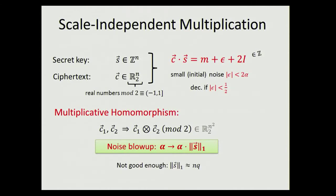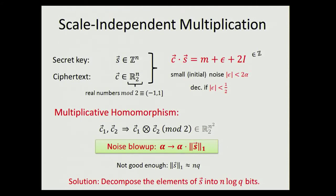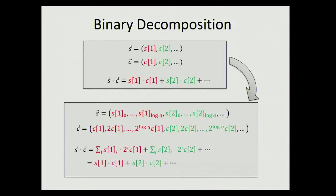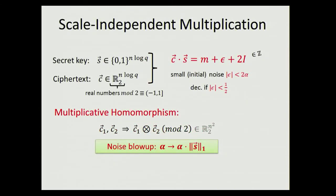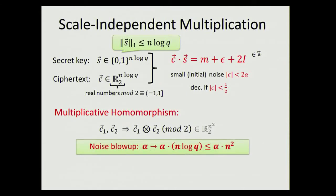The L1 norm of S is potentially large (of order N·Q), but this is easy to fix with a known trick: instead of S being N elements over Z_Q, decompose it into bits, giving a new S of dimension N·log Q bits. The ciphertext also becomes dimension N·log Q, but nothing else changes. The L1 norm is then at most N·log Q, so noise grows by a multiplicative factor of at most N² per multiplication—regardless of scale.